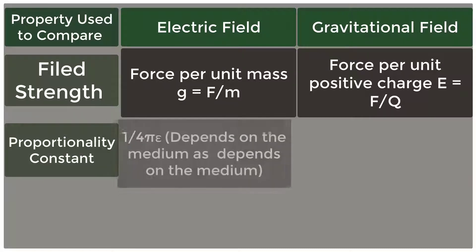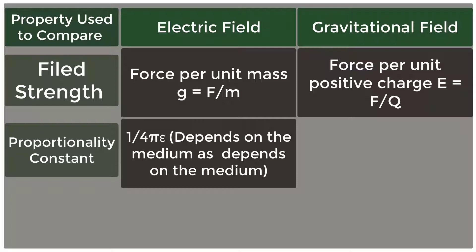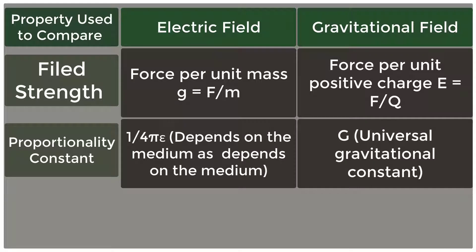Proportionality Constant: 1 over 4 pi epsilon depends on the medium. G is the Universal Gravitational Constant.